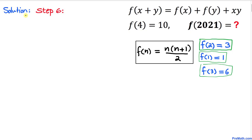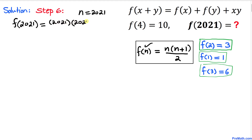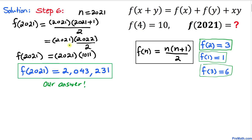Here's our final step. We are going to find the value of f(2021). Using our formula with n = 2021, we get f(2021) = 2021·(2021 + 1) / 2 = 2021·2022 / 2. After calculation, f(2021) = 2,043,231. That's our final answer. Thanks for watching and please don't forget to subscribe to my channel for more exciting videos.